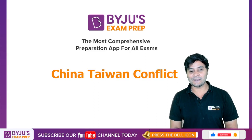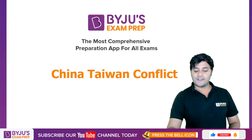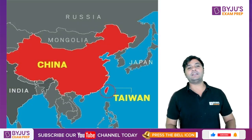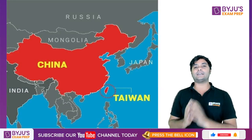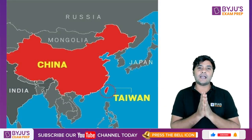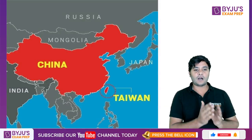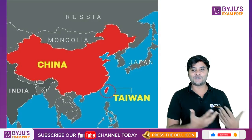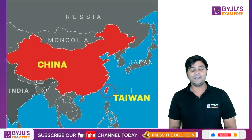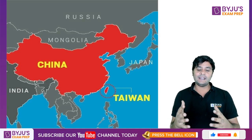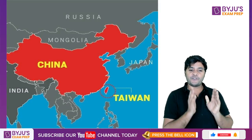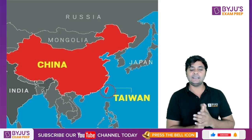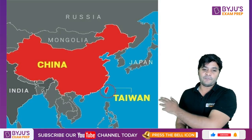When we talk about China and Taiwan, here is a map that depicts where each is located. You can see that China and Taiwan are separated by water — a sea — between them. Both have a very long history.